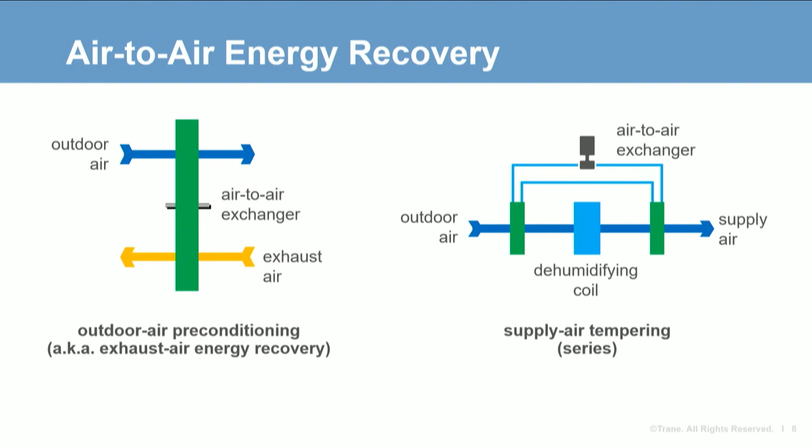Another configuration recovers heat from either a separate airstream or a different location in the same airstream, and uses it to reheat air that has been dehumidified. In the series configuration shown here, the air-to-air exchanger removes sensible heat from the entering outdoor air upstream of the dehumidifying coil, then transfers that heat to reheat the air downstream of the coil. We often refer to this as supply air tempering.